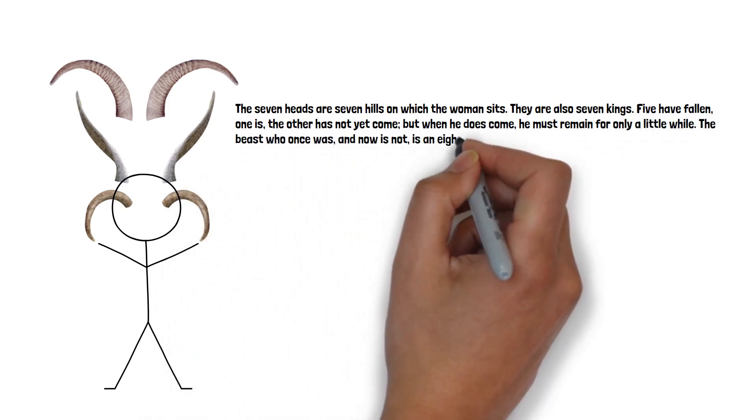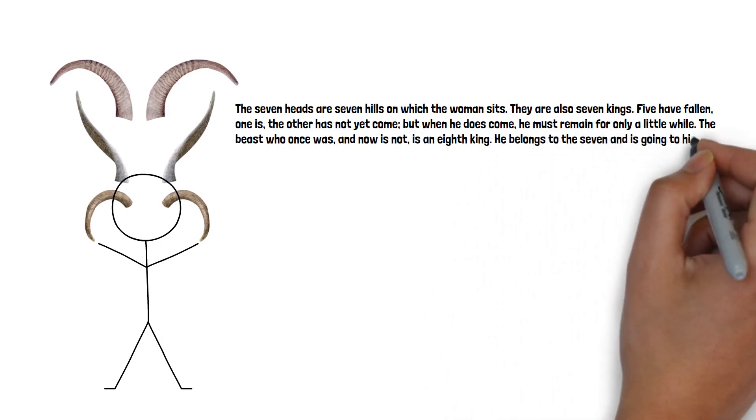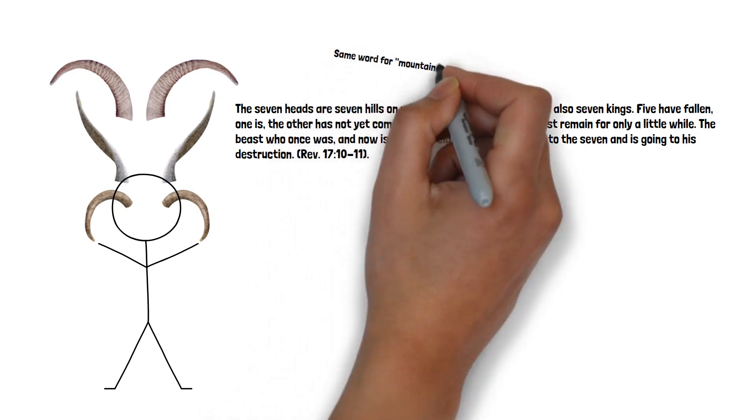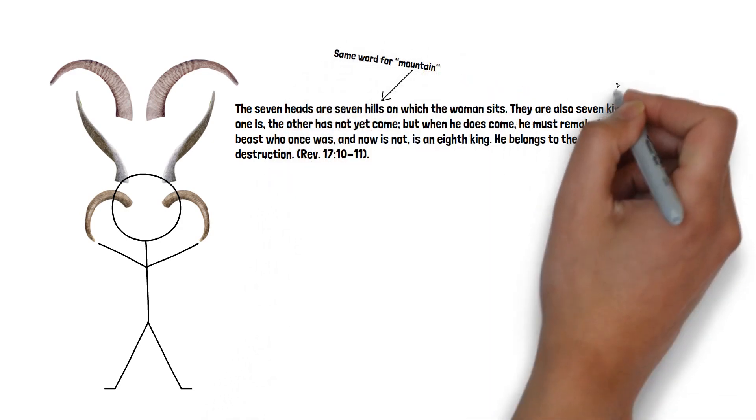The beast, who once was, and now is not, is an eighth king. He belongs to the seven and is going to his destruction. The seven heads of the beast are hills, or mountains, and they're also kings.